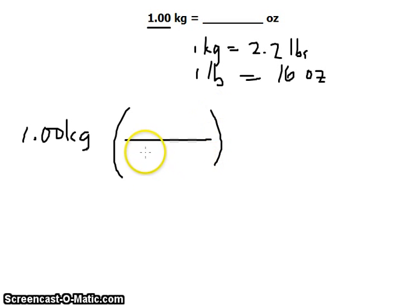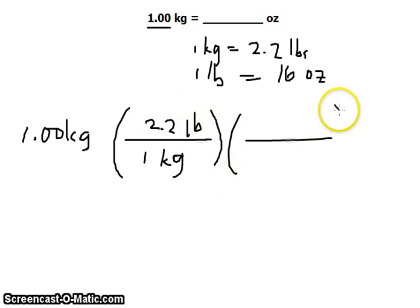In the denominator, the unit we need to cancel out is kilograms. In the numerator is 2.2. Then 1 pound is 16 ounces.